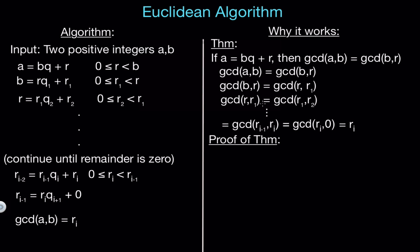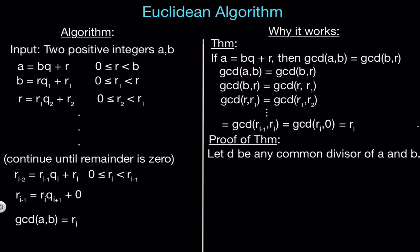Now let's prove this theorem. Let D be any common divisor of A and B — not necessarily the greatest common divisor, just any arbitrary common divisor. That means D divides A and D divides B. From this, it's not hard to conclude that D must also divide A minus B times Q. That's because A is a multiple of D and B is a multiple of D, so B times Q is a multiple of D, meaning we can factor D out of A minus B times Q. Since A minus B times Q equals R, that tells us D must divide R.